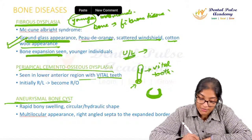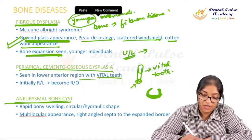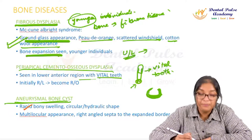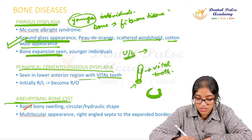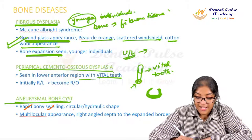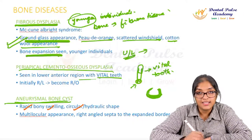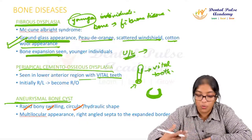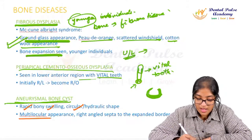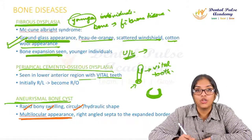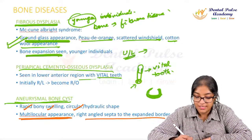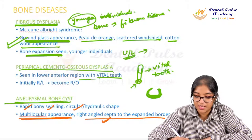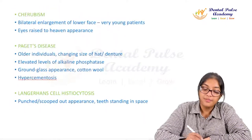Aneurysmal bone cyst presents with rapid swelling, takes a circular hydraulic shape indicating blood-filled cavities within bone, and is characteristically multilocular. It is differentiated by right-angled septa to the expanded border.